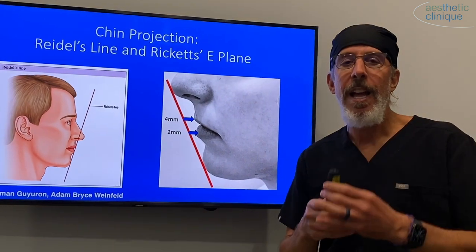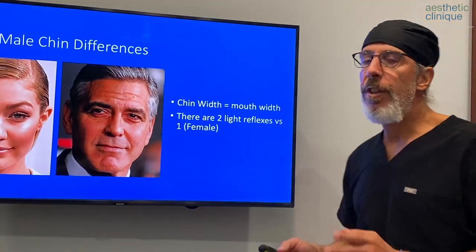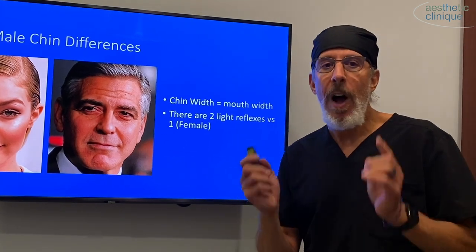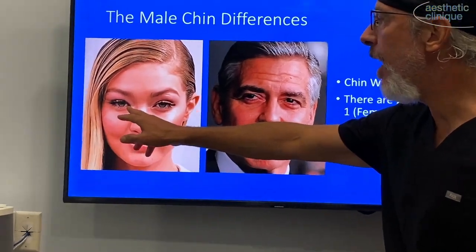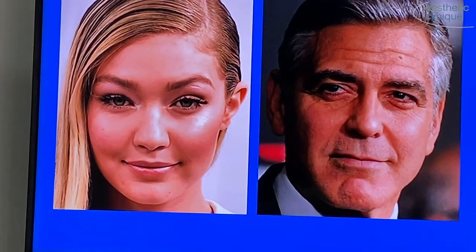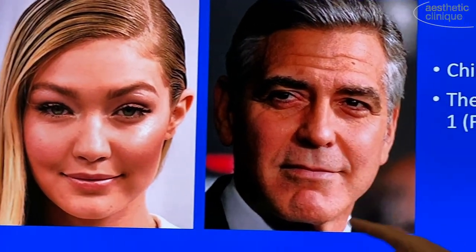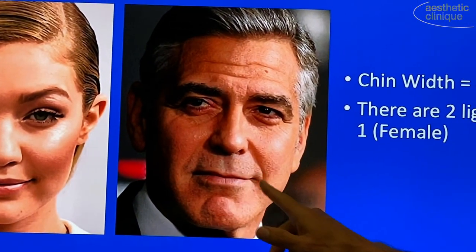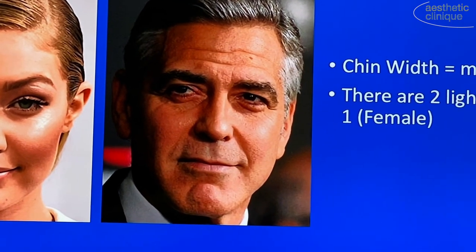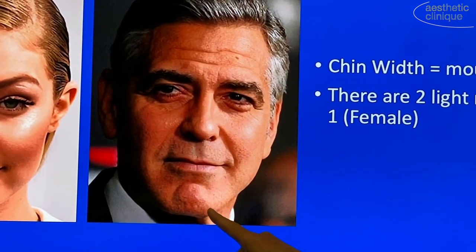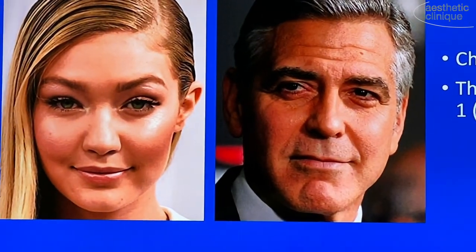We went over length, and now width. The male chin is going to be wider than the female. The female chin should be about as wide as the intercanthal distance — almost the same as the width of the nose. In the male, it should be about as wide as the lips. The other pertinent difference is that there are two distinct points in a male chin and only one distinct point in a female chin.